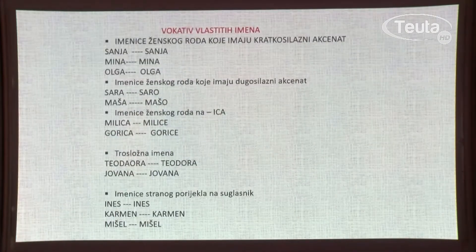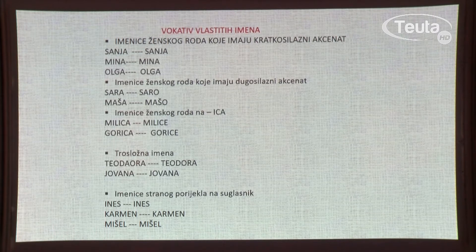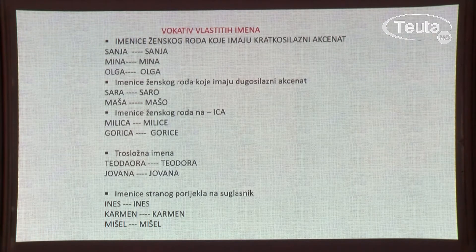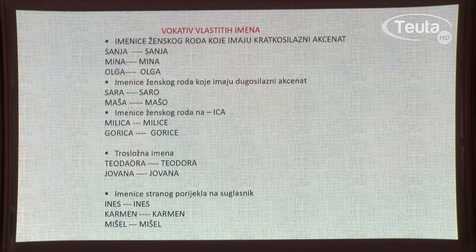Zadržat ćemo se kratko i na vlastitim imenima i njihovoj upotrebi u vokativu, u rečenici prilikom obraćanja. Imenice ženskog roda koje imaju kratkosilazni akcenat — kao što su Sanja, Mina, Olga — u vokativu će imati isti oblik: hej, Sanja; hej, Mina; hej, Olga. Imenice ženskog roda koje imaju dugosilazni akcenat — kao što su Sara, Maša — u vokativu dobiju nastavak O: Saro, hej, Mašo. Imenice ženskog roda na -ica, kao što su Milica, Gorica, u vokativu imaju oblik: Milice, Gorice.